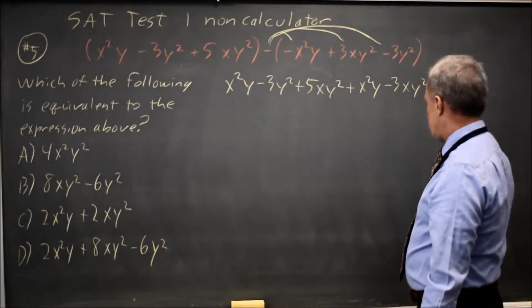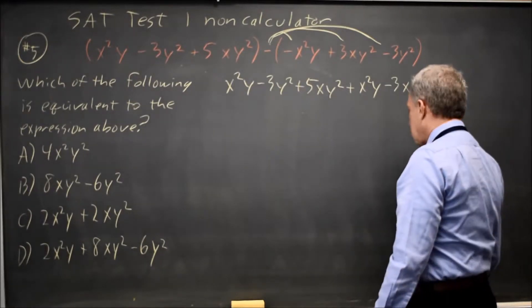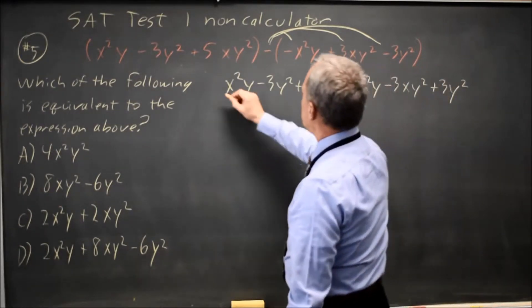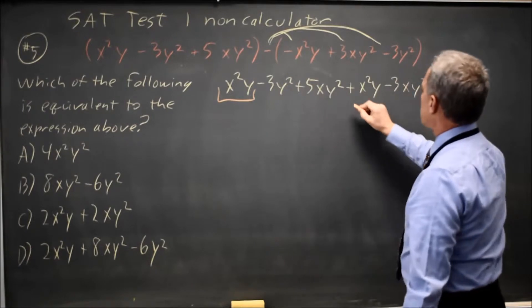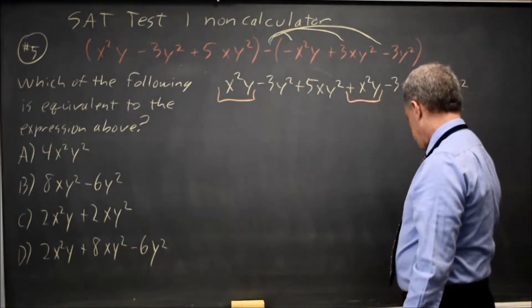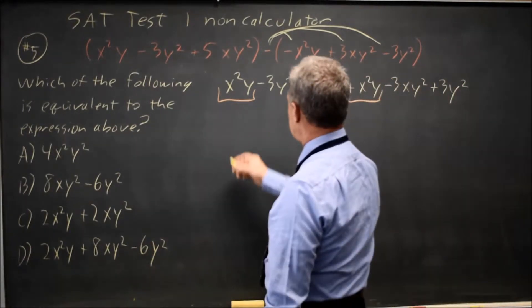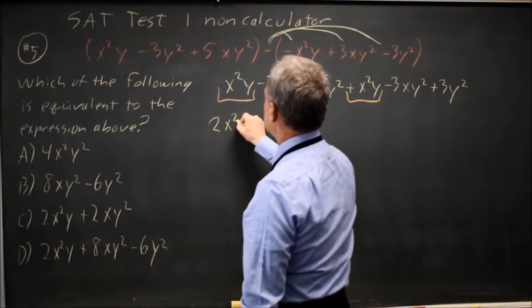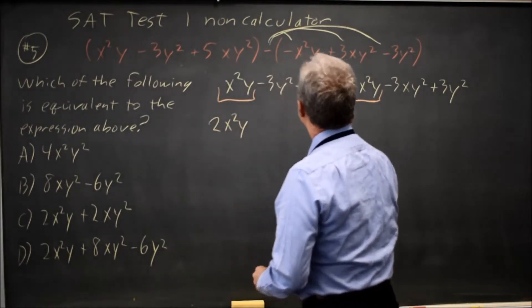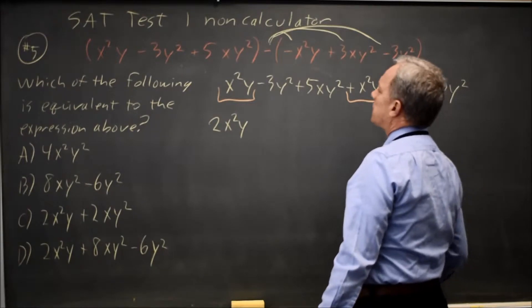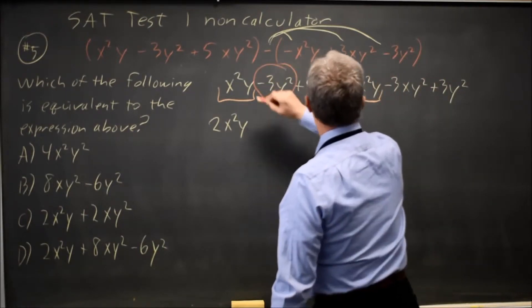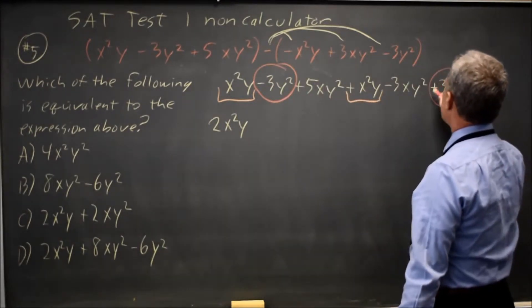Now I want to combine like terms. I have x squared y and another x squared y. That gives me 2x squared y. I have negative 3y squared and positive 3y squared.